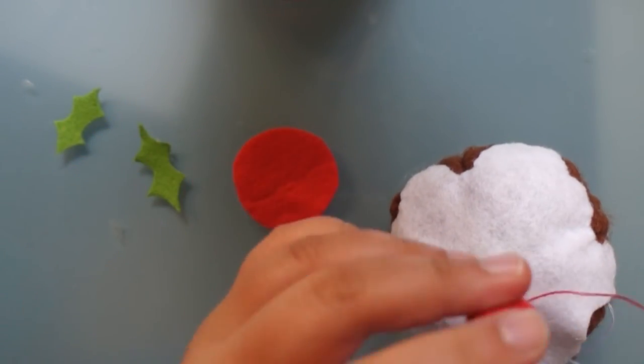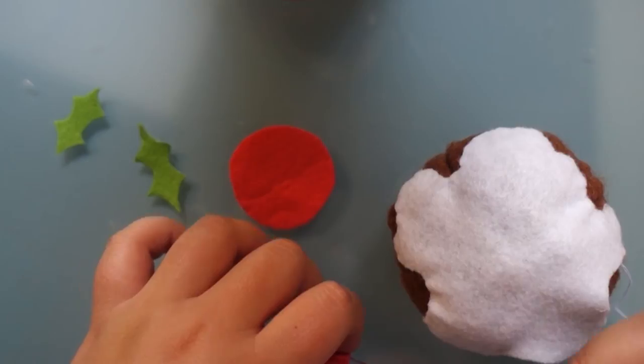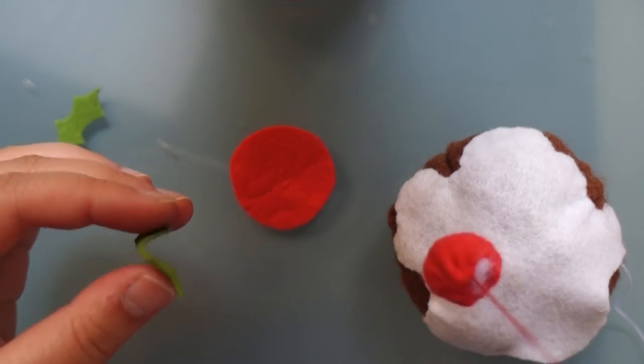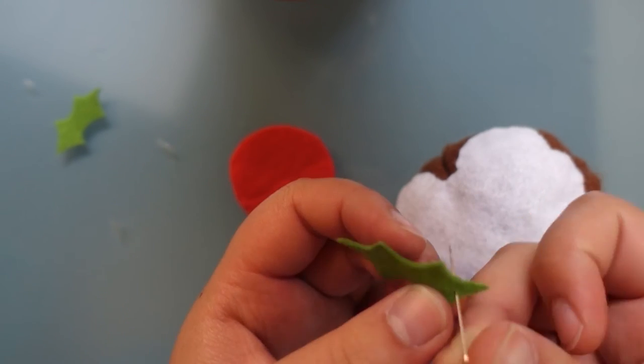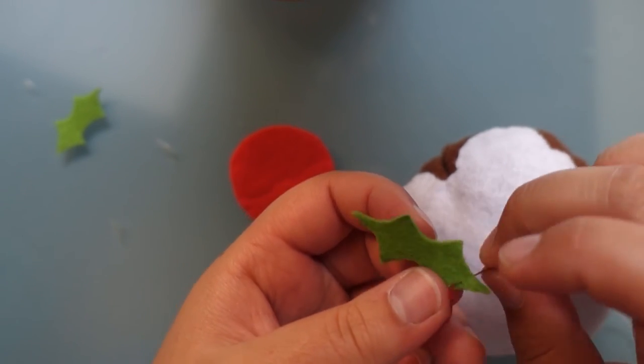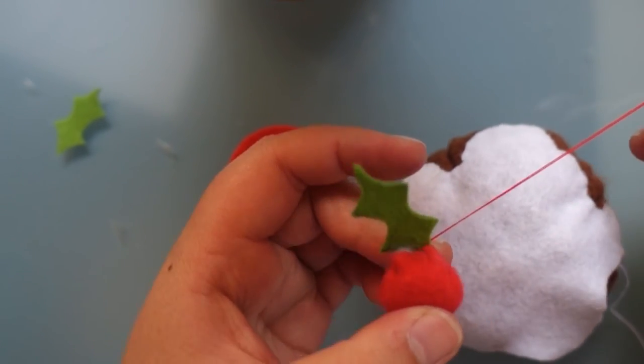Now that's done we want to attach our berries and leaves to the top of our pudding. So what we need to do is, with our thread still attached, grab one of the leaves and just poke it through the needle and attach it to the berry like so.